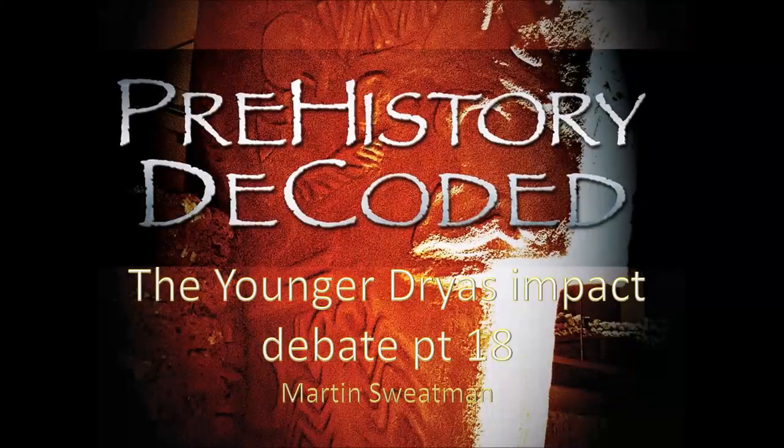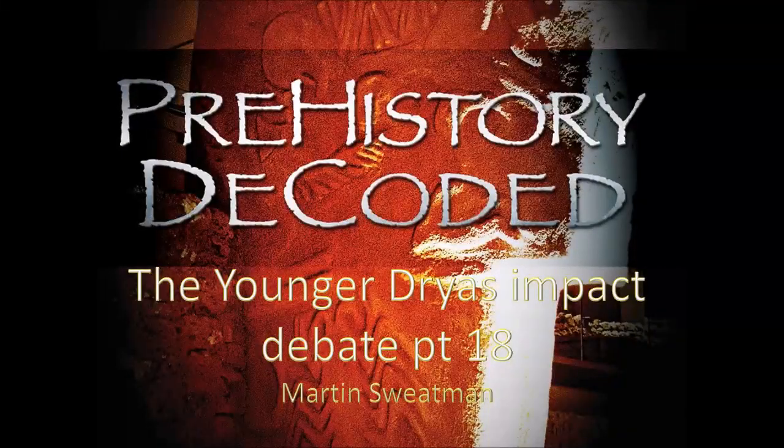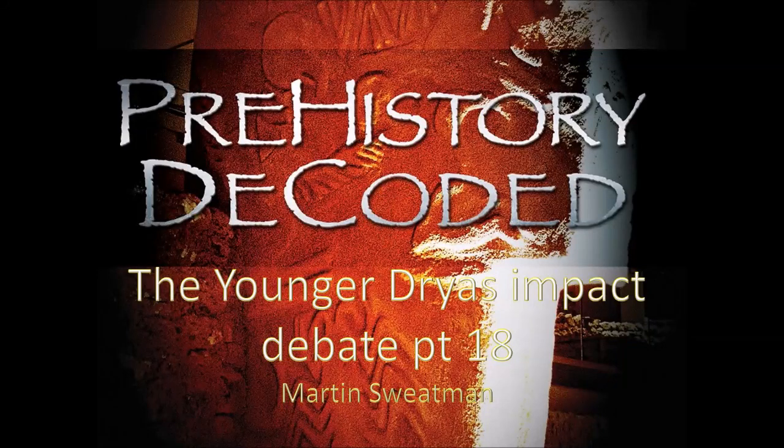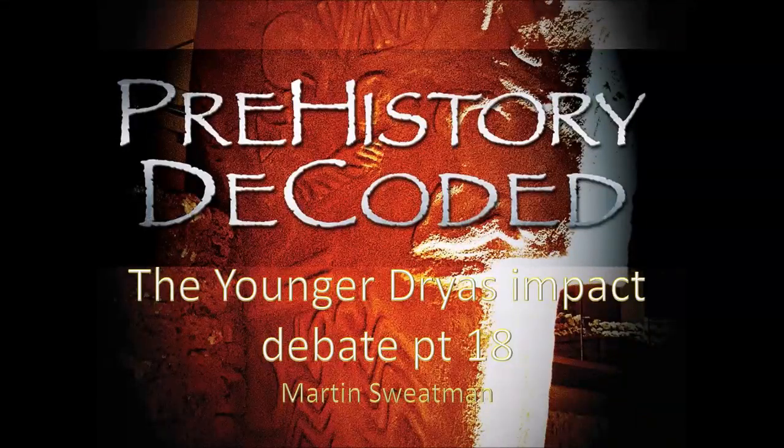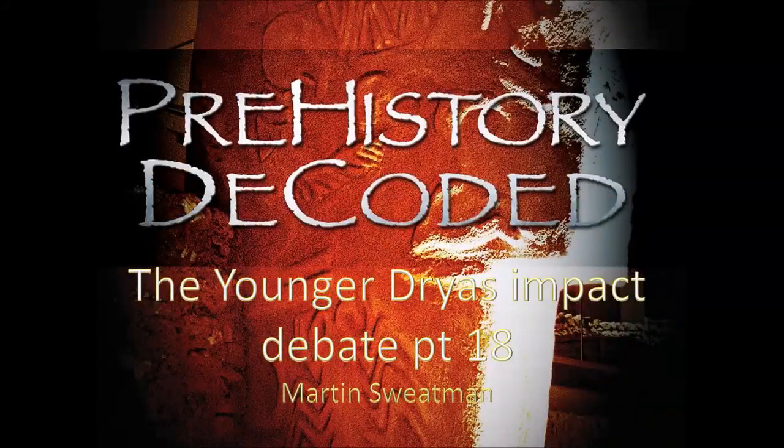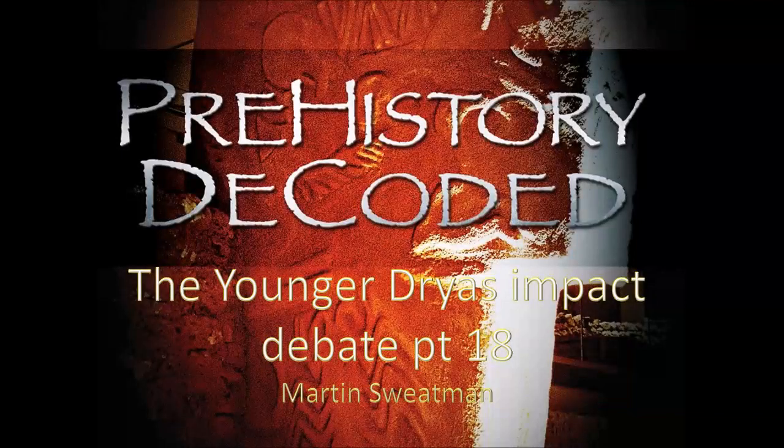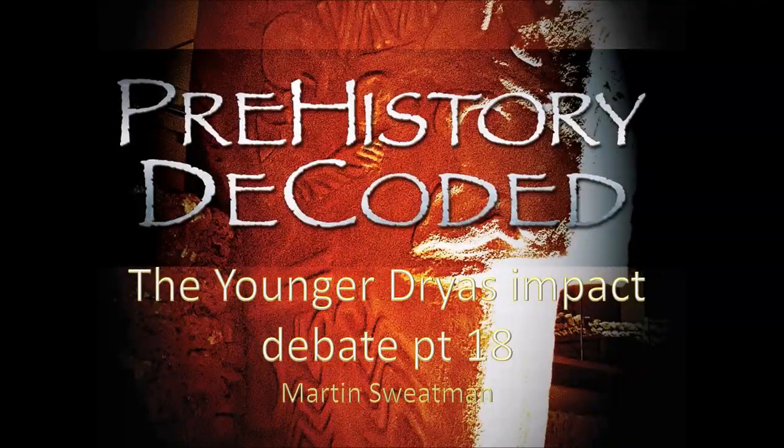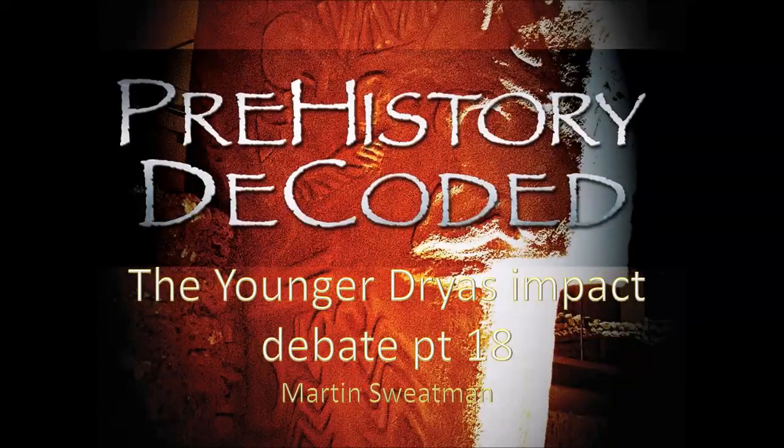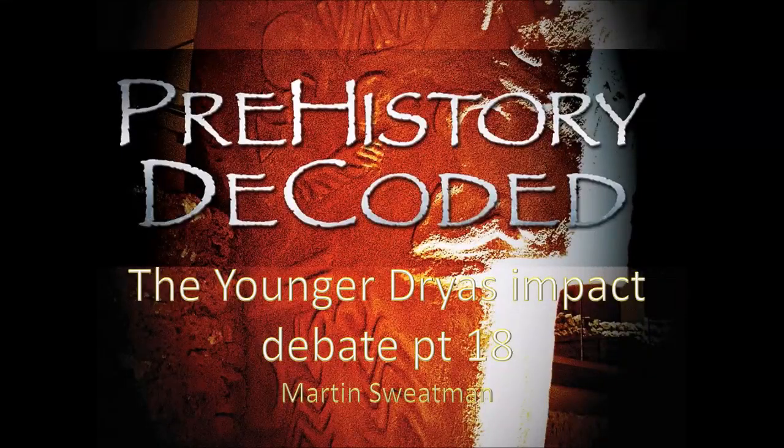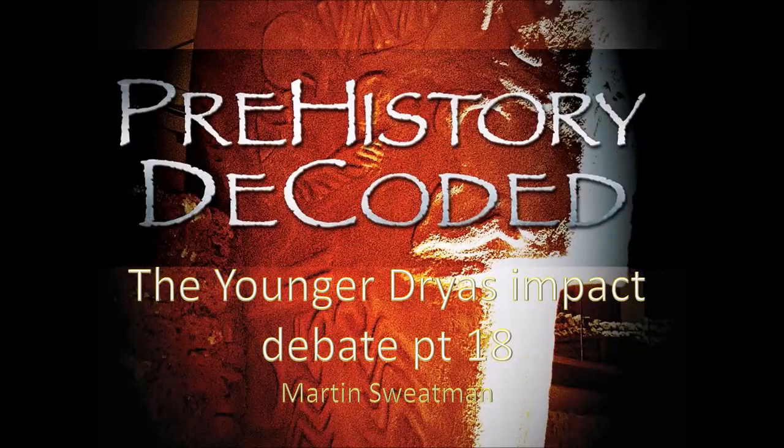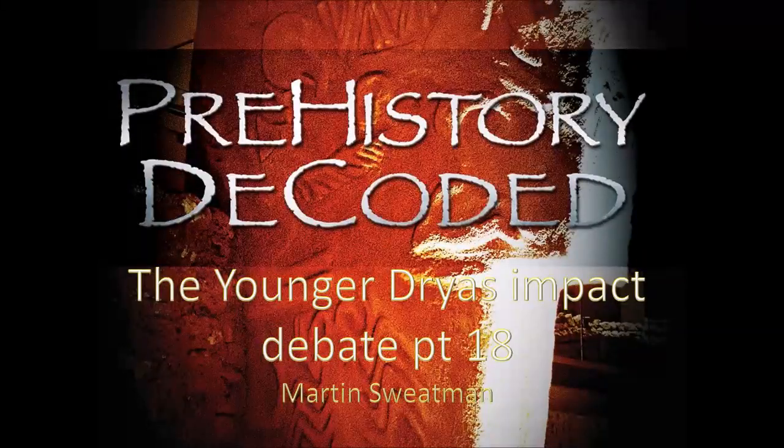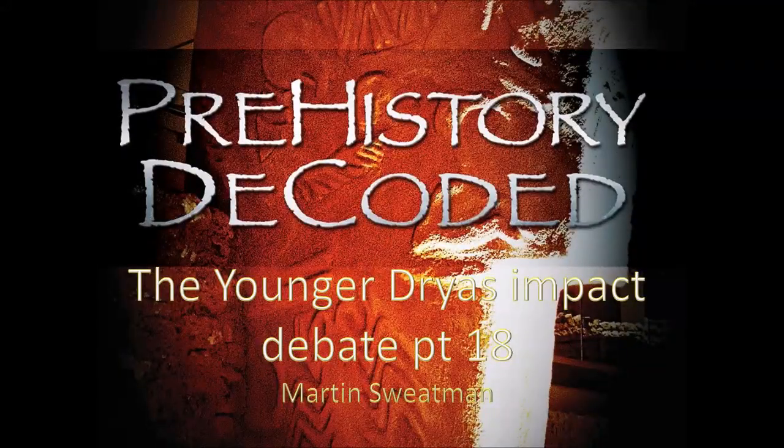The layer of platinum found across North America and Greenland with indications it might extend into Europe at the base of the Younger Dryas black mat and coinciding with other impact indicators like nanodiamonds and impact spherules effectively proves it. The only issues to be resolved are whether and how it actually triggered the Younger Dryas mini ice age and whether and how it led to the extinction of many species of megafauna and changes in human cultures.